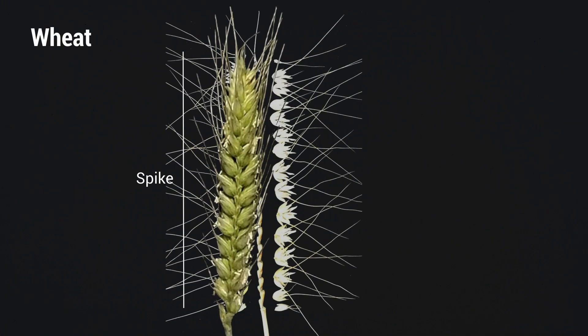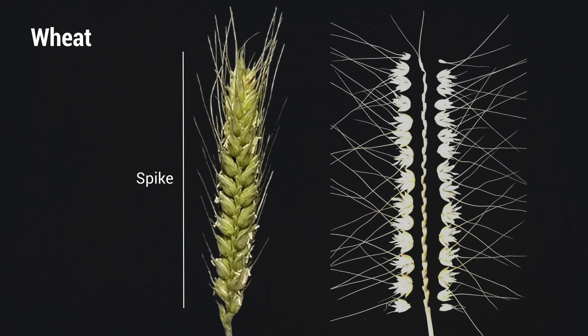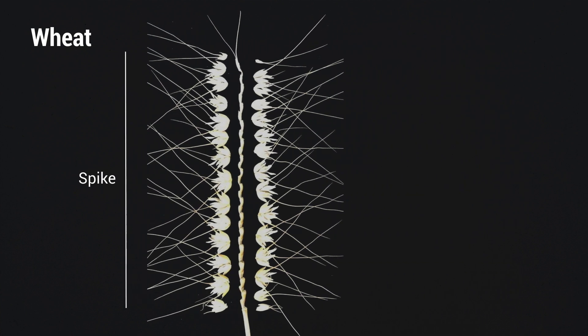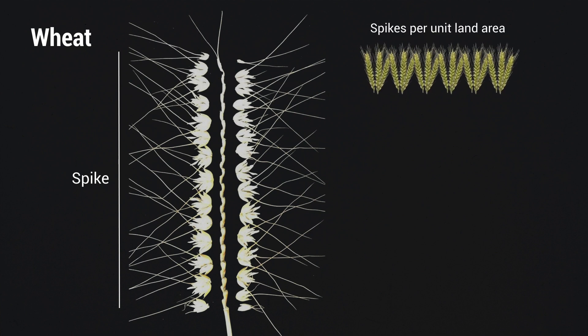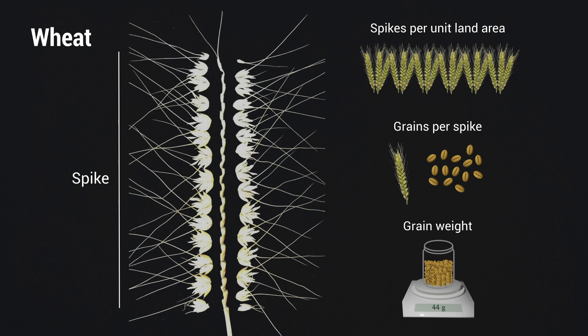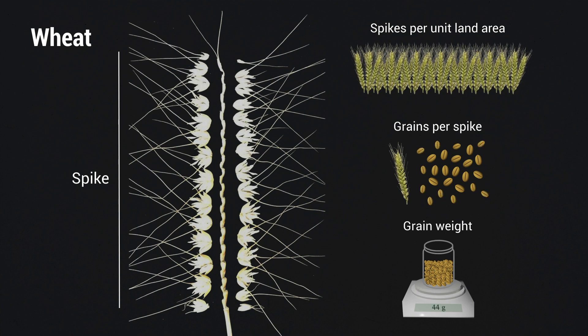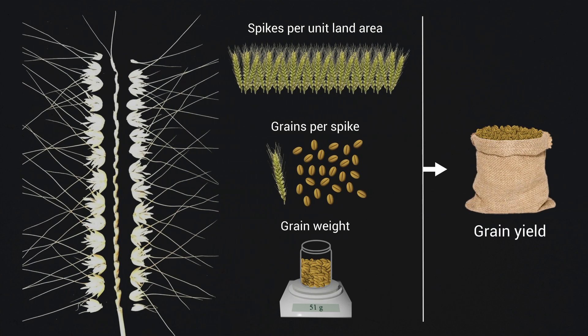Cereals such as wheat are vital crops for both food and feed. Spike architecture influences grain yield in wheat by three major components: spikes per unit land area, grains per spike, and grain weight. An increase in any one of these components can improve grain yield.